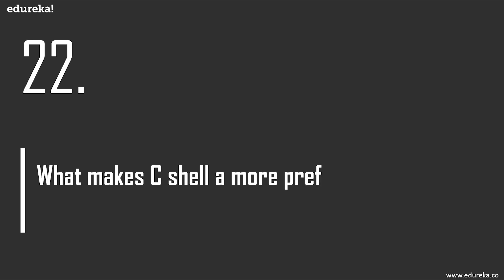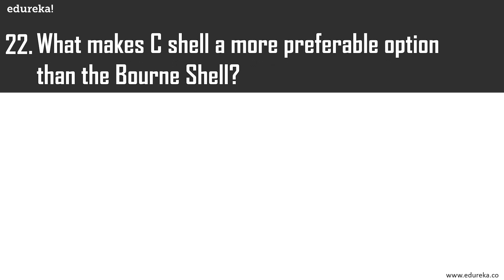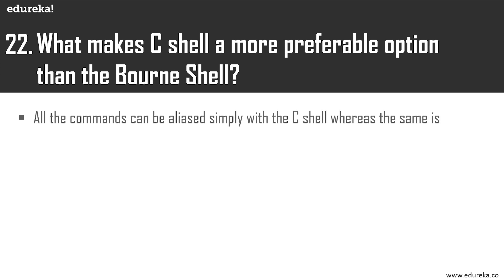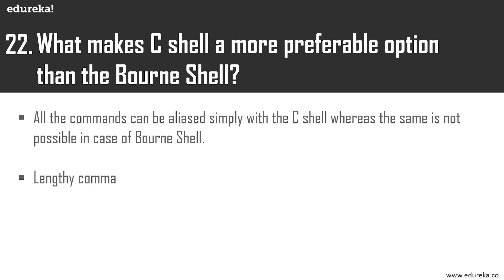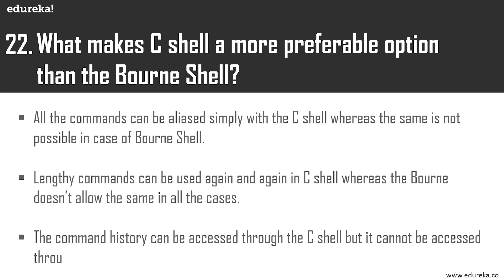What makes the C shell a more preferable option than the Bourne shell? Three points favor the C shell: first, all commands in the C shell can be aliased, whereas in the Bourne shell they cannot all be aliased. Second, the C shell is great for reusing scripts — lengthy commands can be reused. Third, the C shell provides access to command history, which the Bourne shell does not.